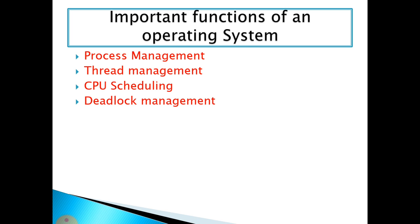Next is deadlock management. Processes request resources; if a resource is unavailable, the process enters a waiting state from which it cannot recover — that is a deadlock. A deadlock occurs when four necessary conditions are simultaneously satisfied: mutual exclusion, hold and wait, no preemption, and circular wait. If all four hold concurrently, the system is in a deadlock state; otherwise it may be in an unsafe state but not deadlock.